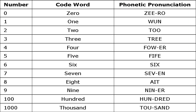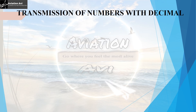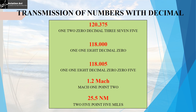There are also phonetic pronunciations for numbers in place, like zero, one, two, three, four, five, six, seven, eight, and niner. Sometimes while transmitting numbers you may encounter a point or decimal. For example, if the frequency is 120.375, it will be spelled on RT as 'one two zero decimal three seven five'. If the frequency is 118.005, it is spelled as 'one one eight decimal zero zero five'.